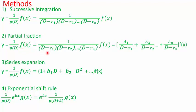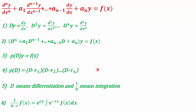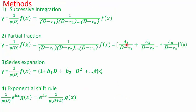The second method is of partial fractions. Here (D - r1)(D - r2)···(D - rn) is in the denominator, so we can write it as a sum: a1/(D - r1) + a2/(D - r2) + ... + an/(D - rn). Bringing f(x) inside and applying the formula to each term makes this a much easier way of solving the problems.